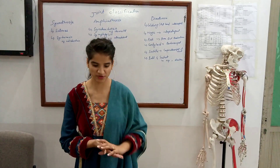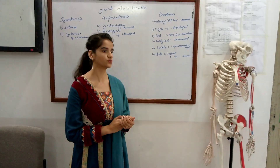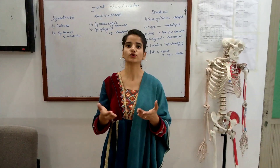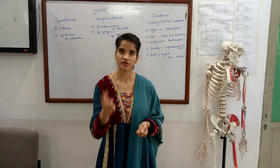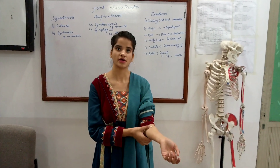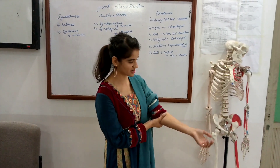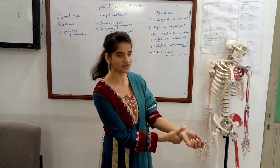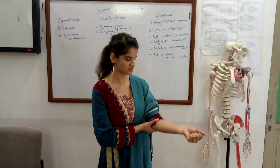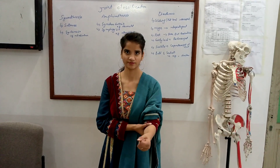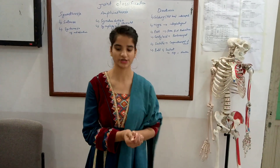The next category is the pivot joint, which allows one axis of rotation. Examples include the atlanto-axial joint and the proximal and distal radio-ulnar joints. This area comprises the proximal radio-ulnar joint and this area comprises the distal radio-ulnar joint. It allows one motion — pronation and supination — so these are essentially pivot joints.